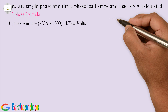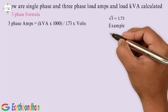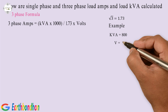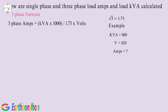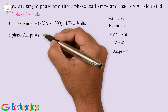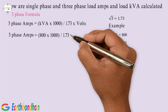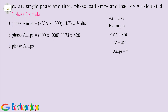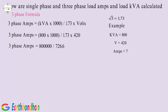SQRT3 equals 1.73. Example: KVA equals 800, V equals 420, SQRT3 equals 1.73, amps equals unknown. Amps equals 800 multiplied by 1000, divided by 1.73 multiplied by 420. Equals 800,000 divided by 726.6.